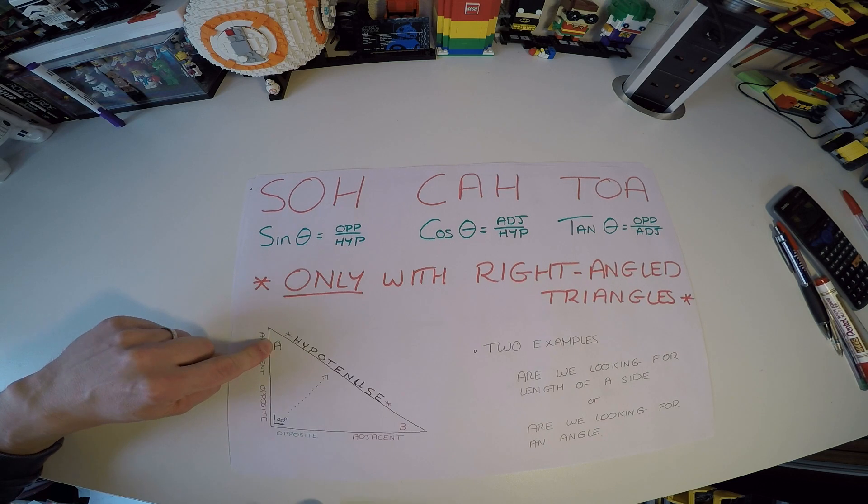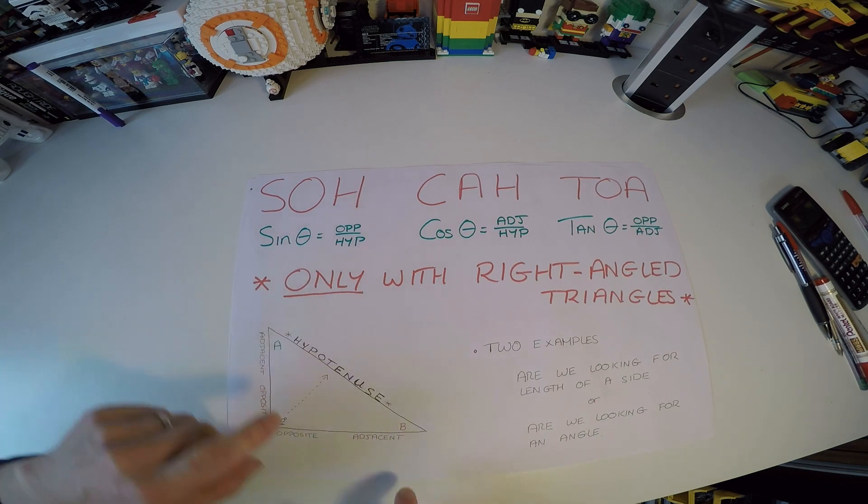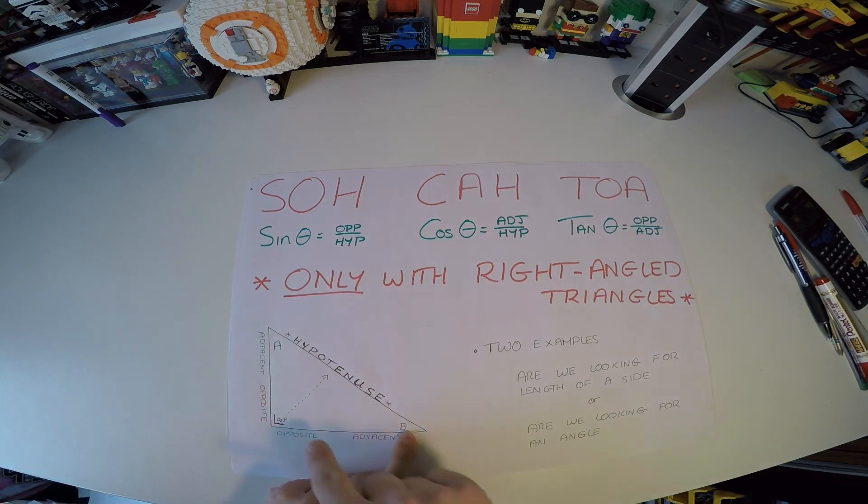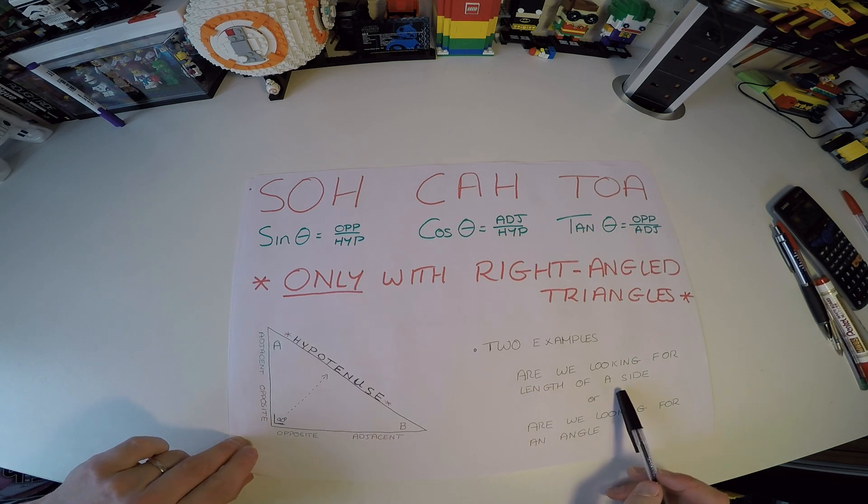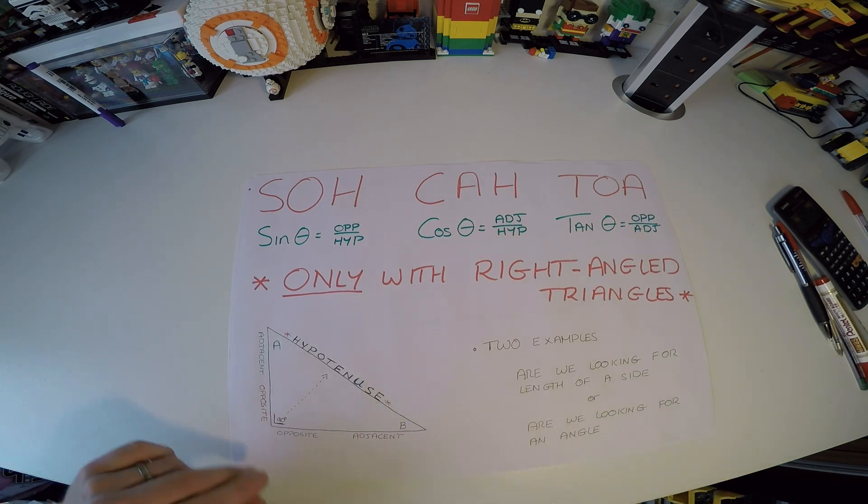So one more time, if we're using this angle up here, this side is the opposite, but if we're using this angle here, this side is the opposite. So try and see that from the colors. We're going to look at two quick examples. One where we're looking for the length of a side, and one is where we're looking for an angle.